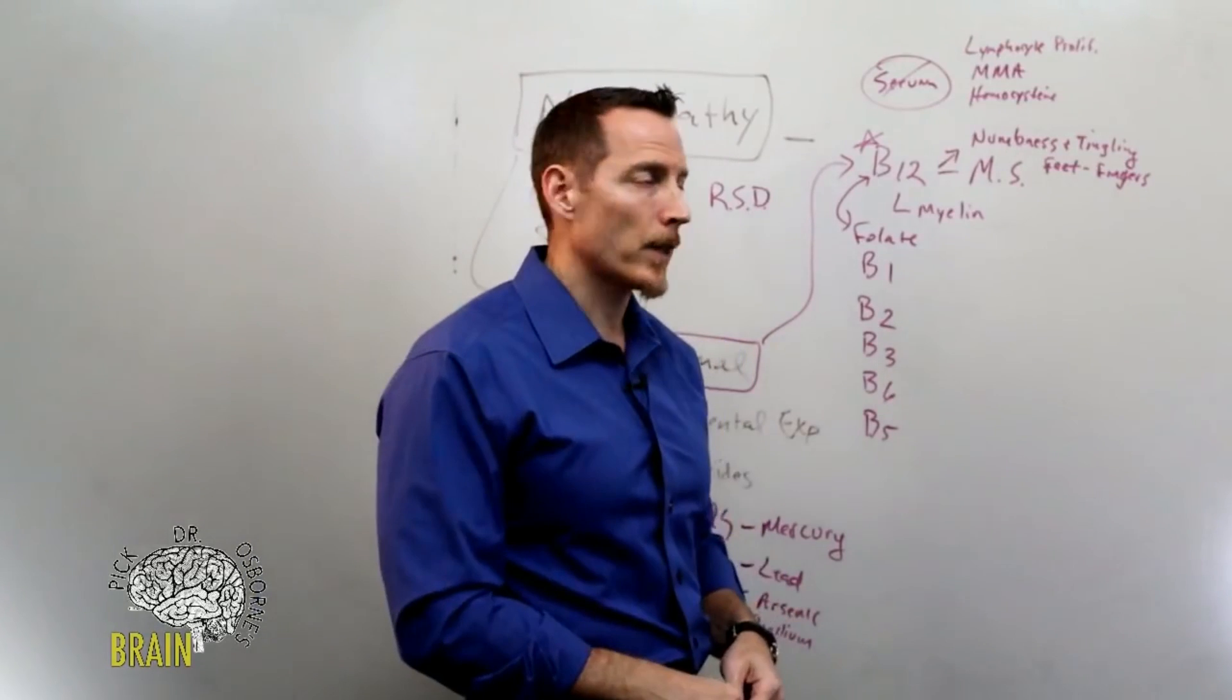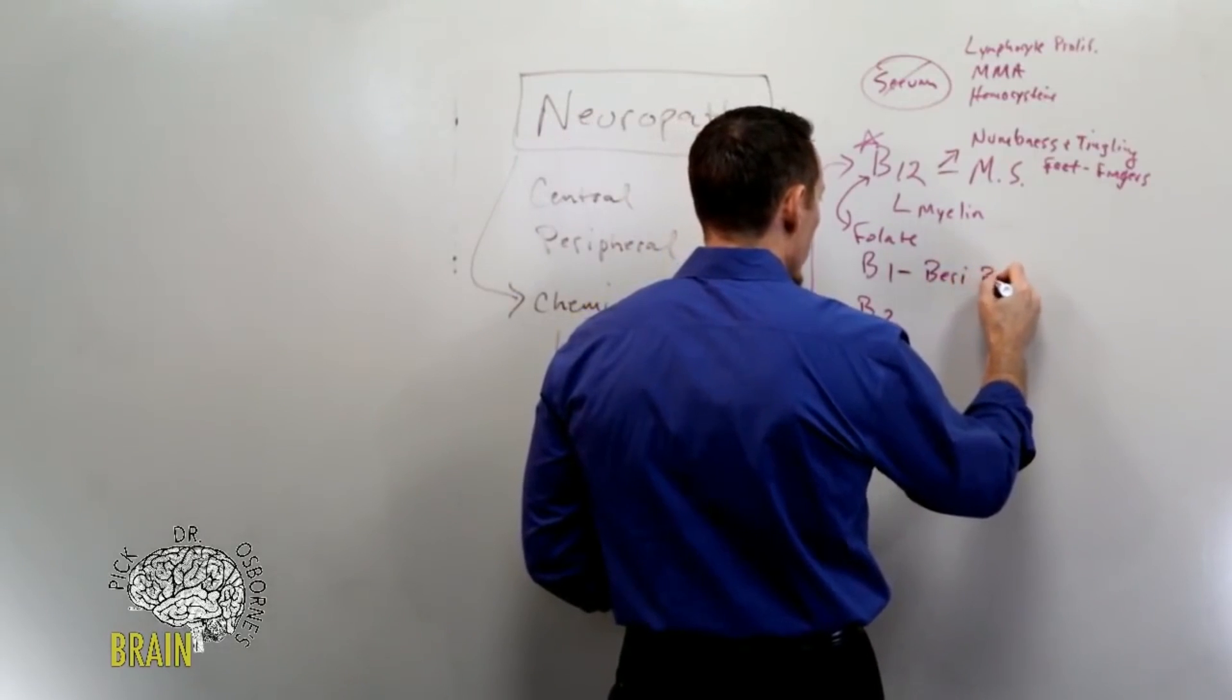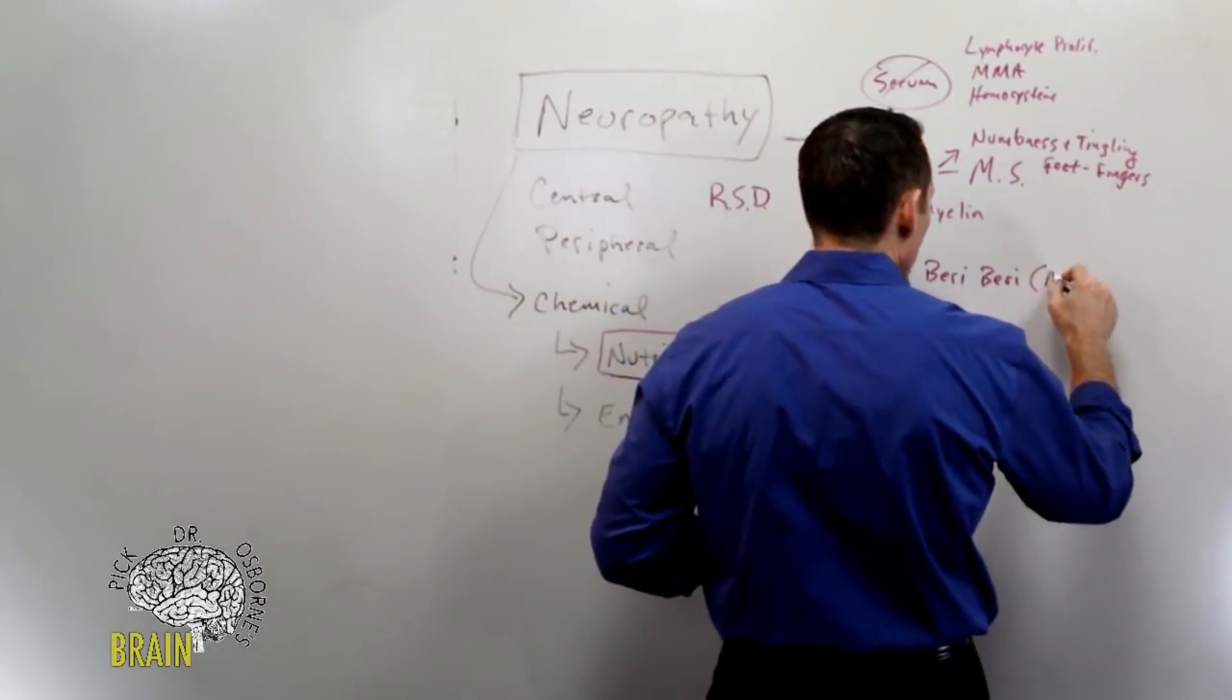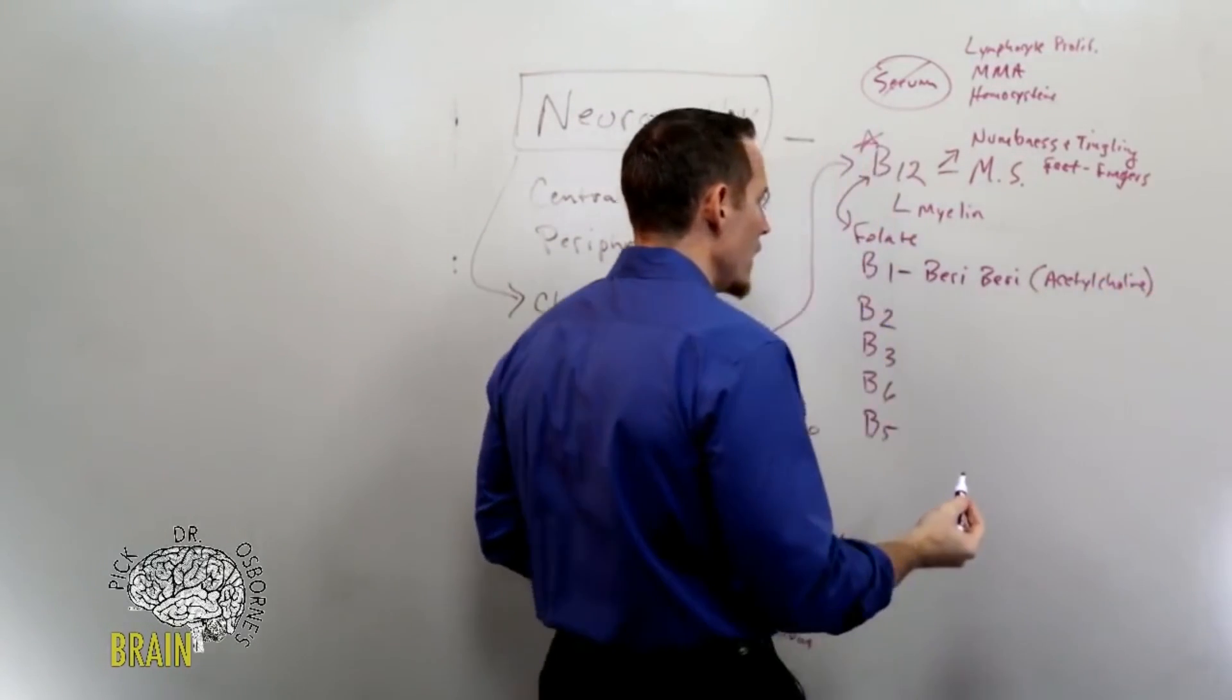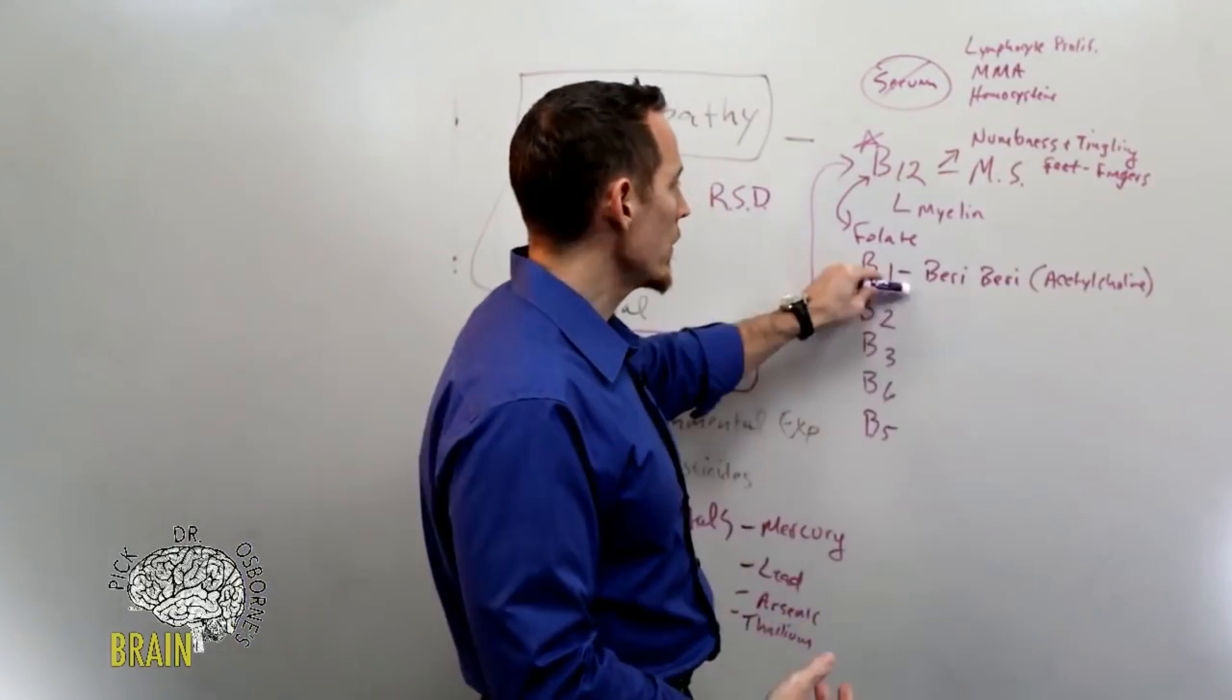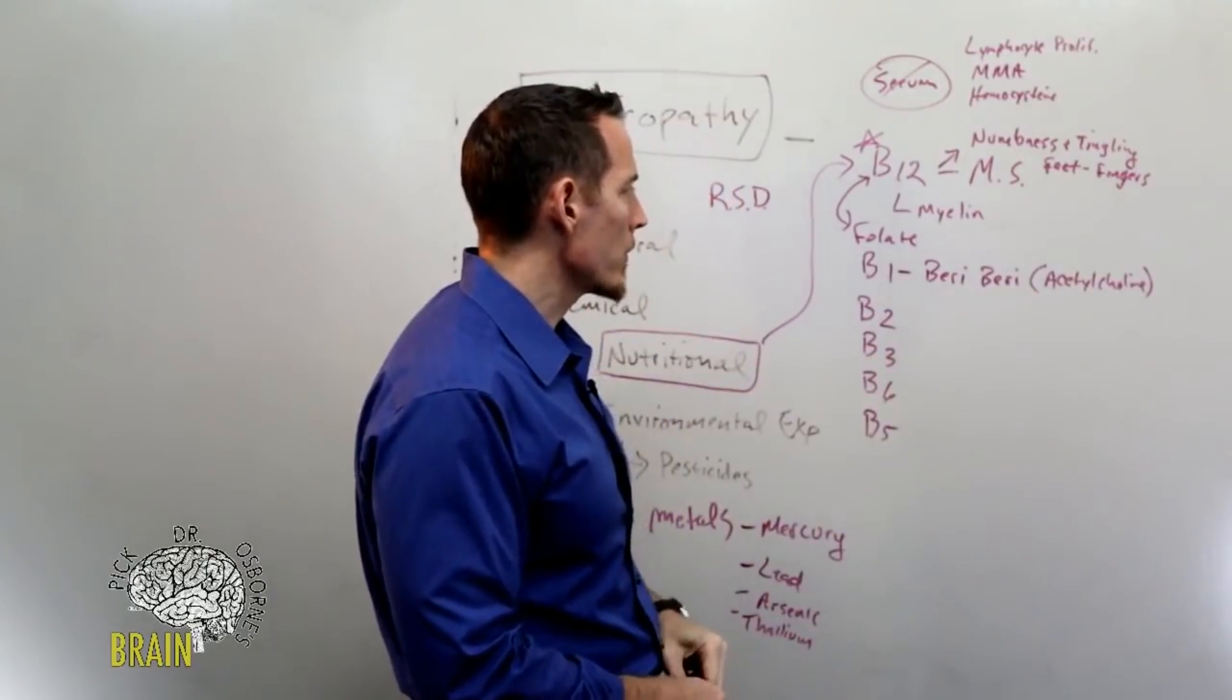Vitamin B1 deficiency, also known as beriberi, causes what's called a wet neuropathy. Beriberi affects the production of something called acetylcholine. Acetylcholine is a neurotransmitter, and you need acetylcholine so that your nervous system can communicate to your muscles and your organs and your other tissues. A long-term deficiency of beriberi or vitamin B1 can lead to acetylcholine depletion, meaning you don't make the neurotransmitter necessary for most of your nerves to communicate, and so neuropathy can begin to develop.